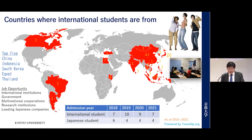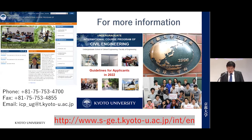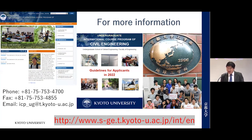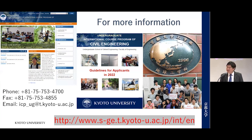The top five countries are China, Indonesia, South Korea, Egypt, and Thailand. For more information, you can visit our website or contact us through email. The application period is now open for those who need preliminary verification — for example, compulsory education systems that may not match Japan's. We are open now, so please check the website and contact the person in charge through the email address provided. The next challenge in civil engineering is waiting for you at Kyoto University. Thank you very much.